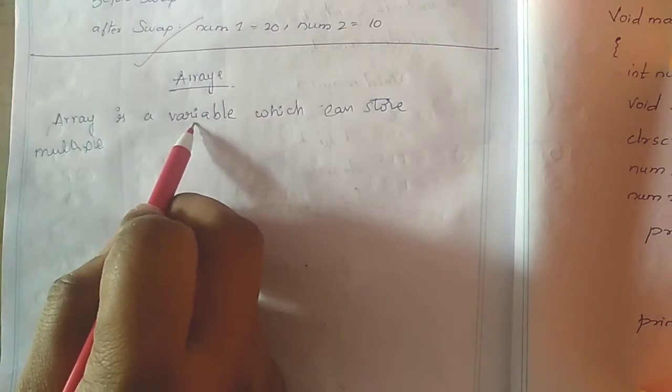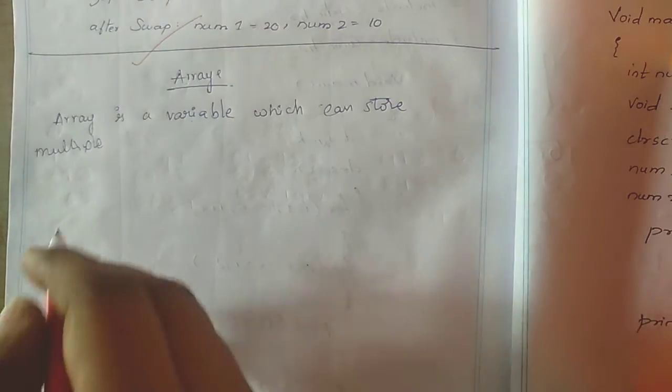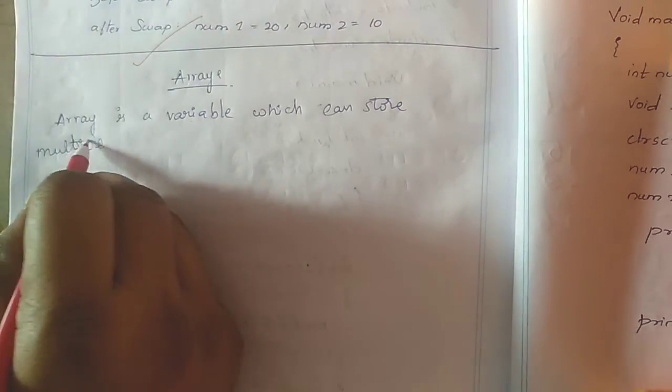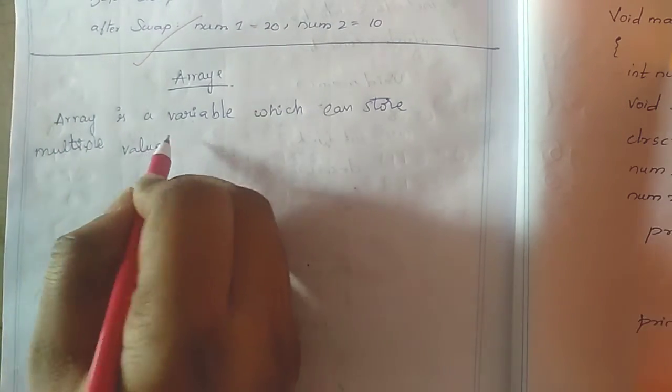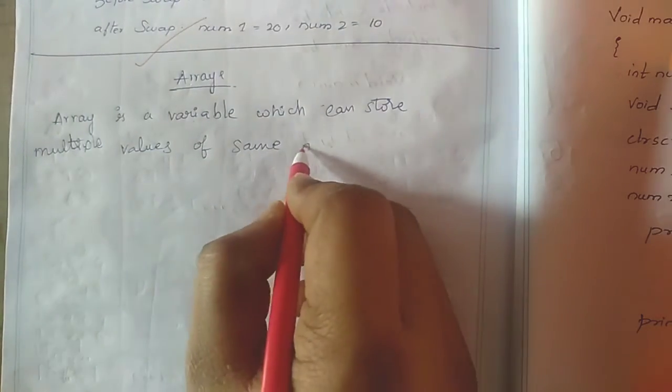Array is a variable which can store multiple values of same data type.